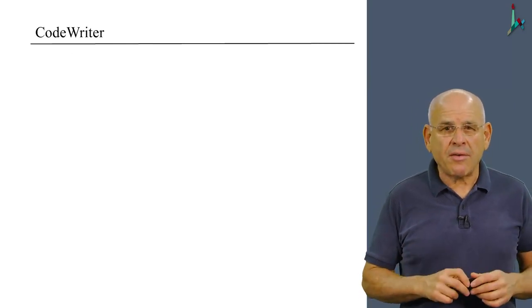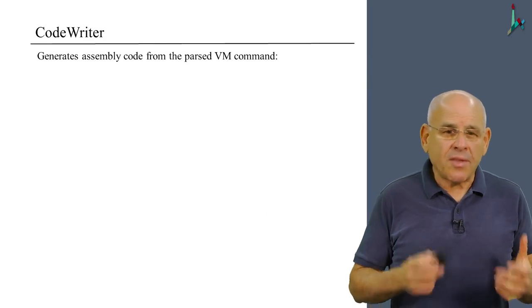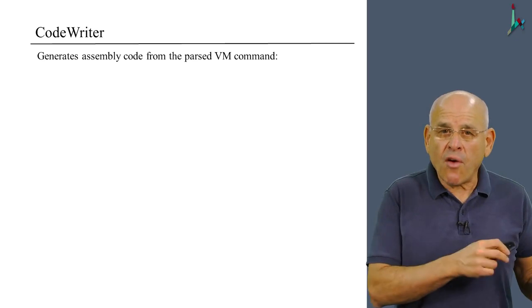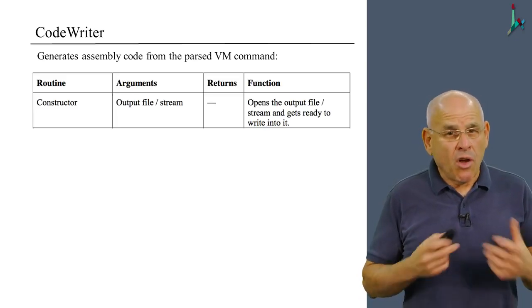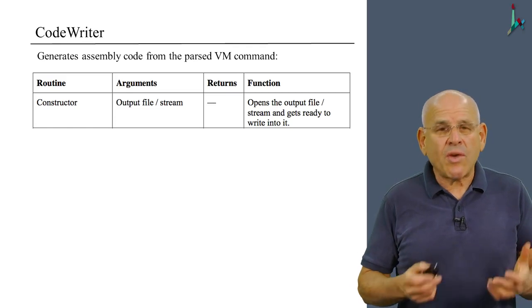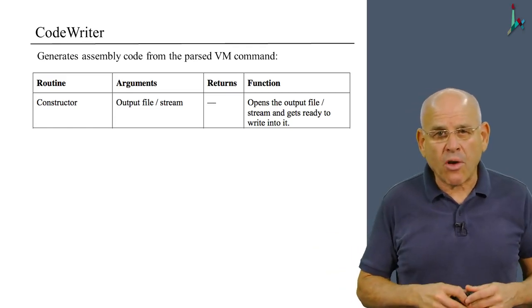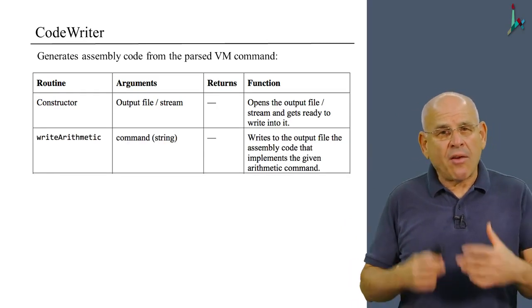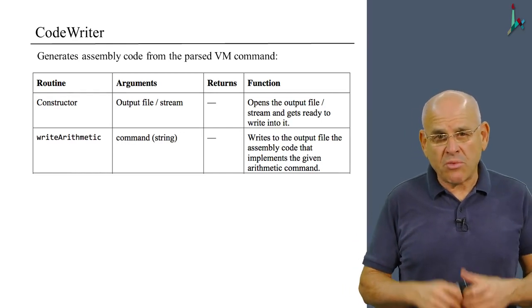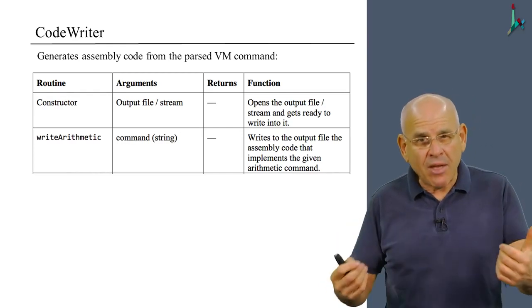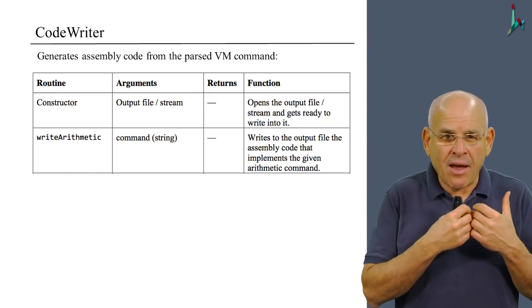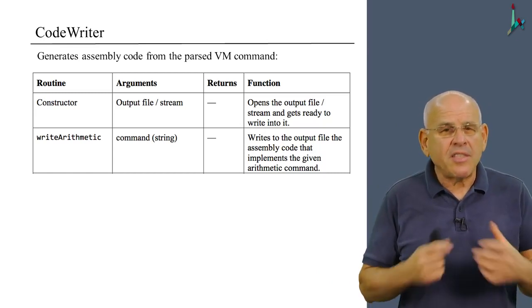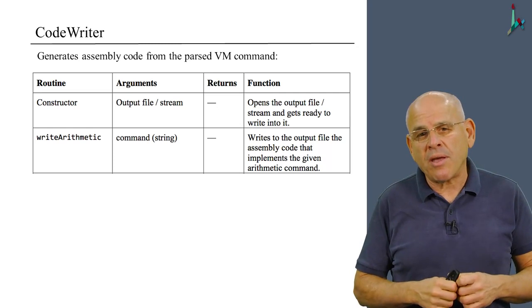Moving along, here's the code writer API. This class, or this module, is responsible for generating the assembly code from the parsed commands. It also has a constructor, and the constructor opens the output file for processing and gets ready to write onto this file. Then there's a writeArithmetic method, which is responsible for writing the assembly code that implements the command, which is the parameter of this method.